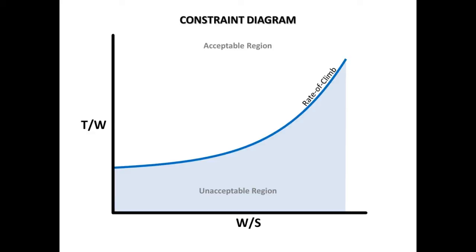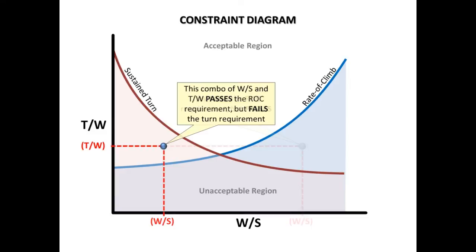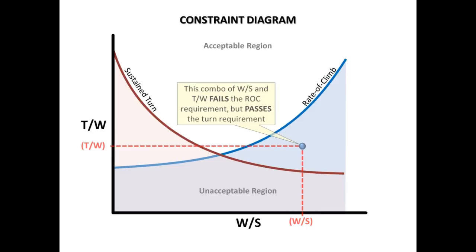Let's consider another performance parameter: sustained turn, also known as constant velocity turn. It is a maneuver in which the aircraft is banked to some desired roll angle while both airspeed and altitude are maintained. It is a desirable property in the design of surveillance and aerobatic aircraft. Again, being above or below the isopleth dictates whether the combination is acceptable or not. Note that by superimposing the two isopleths, the acceptable region is being reduced in size.